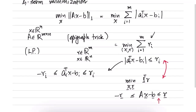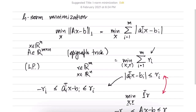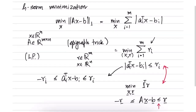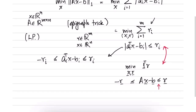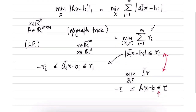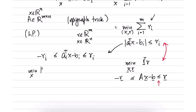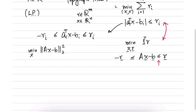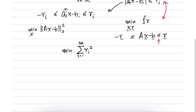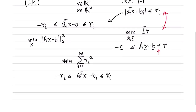What difference does it make if we minimize the L1 norm versus the L2 norm? If we apply the epigraph trick on the least squares problem with Ax minus b norm squared, we obtain minimization of the summation of r_i squared for i equal to 1 to m, where minus r_i is less than or equal to A_i transpose x minus b_i less than or equal to r_i.